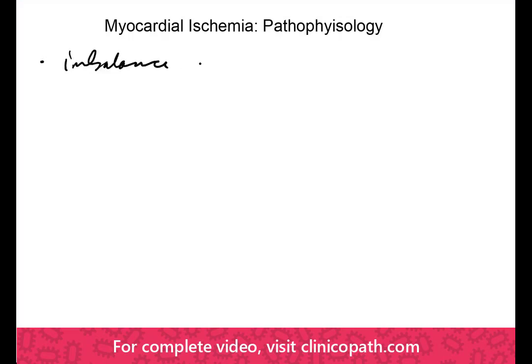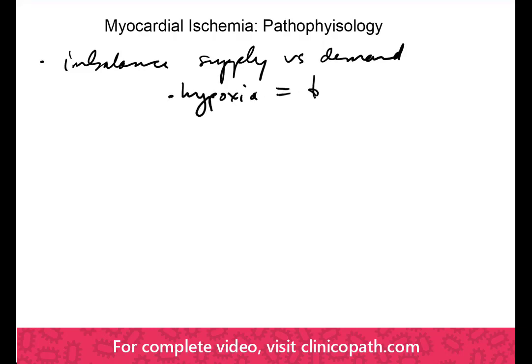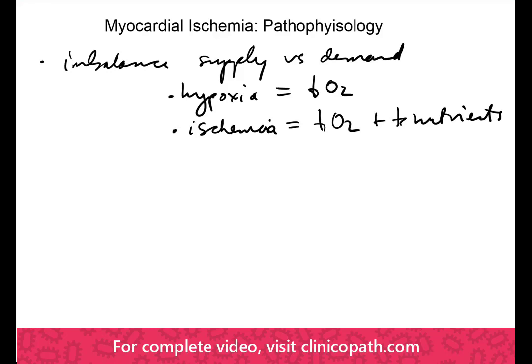Ischemia occurs when there is an imbalance between the supply of nutrients from the blood versus the demand of the organ. In the context of cardiac ischemia, we need to understand the difference between hypoxia, which is a decrease in oxygen supply, versus ischemia, which involves not only a decrease in oxygen but also a decrease in nutrients. Because ischemia implies no blood flow, there is also an inability to clear waste byproducts. As a general rule, hypoxia is much better tolerated by an organ than ischemia.